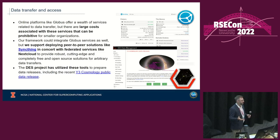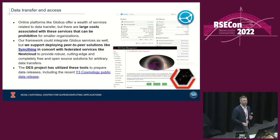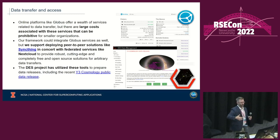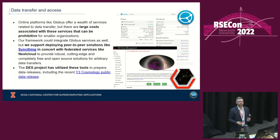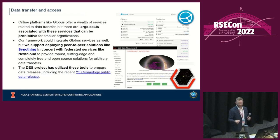We've used SyncThing in the Dark Energy Survey, which handles large amounts of data. When individual researchers have done a lot of data processing on their local laptop or workstation and need to send it to NCSA to be published, SyncThing makes this a fire-and-forget operation. You don't have to provision user accounts on the host institution's computing systems, as RSync or SFTP would require.